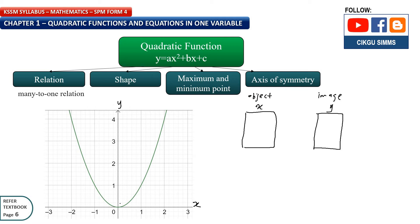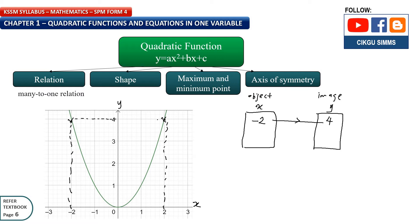Let's see this graph. When x is negative 2, the value of y is 4 — so when x is negative 2, the image is 4. And then when x is 2, the image is also 4. So you can see the relation between x and y.